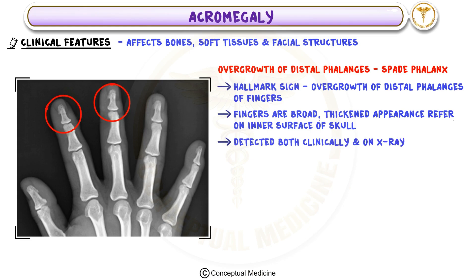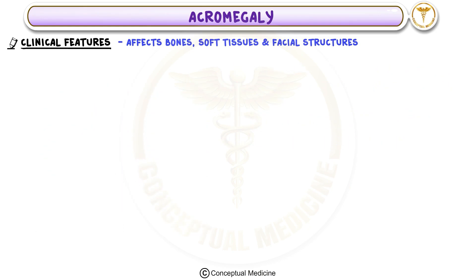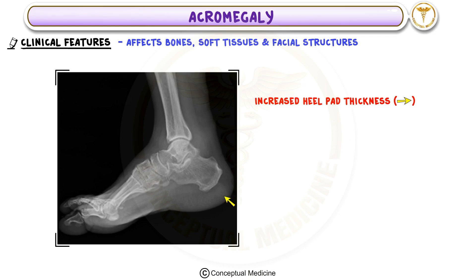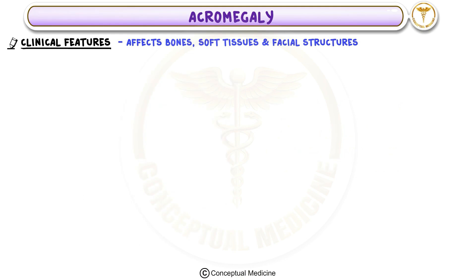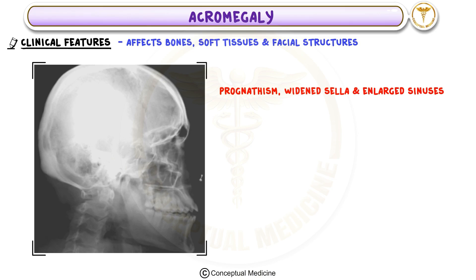Acromegaly also leads to increased thickness of the heel pad, which can be measured radiologically. The normal heel pad thickness is less than 23 millimeters in females and less than 25 millimeters in males. In acromegaly, it exceeds these values, helping in diagnosis.